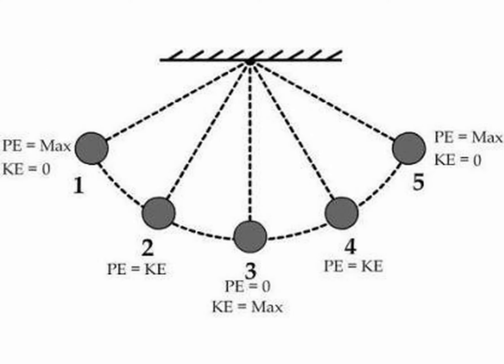Our last example is a pendulum. Imagine you're in a swing going back and forth on the playground. That moment where you pause at the back or the front — that's where you have the maximum amount of potential energy, the highest point. As you go down from the highest point, you decrease potential energy and increase kinetic energy. At positions two and four, you have equal amounts of potential and kinetic energy. At position three, potential energy is at zero and kinetic energy is at its maximum. If you have any questions about potential energy, kinetic energy, or the law of conservation of energy, please go see your science teacher.